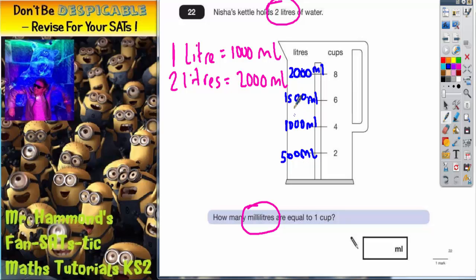So 500, 1000, 1500, 2000 millilitres, which is 2 litres. So it does make sense.